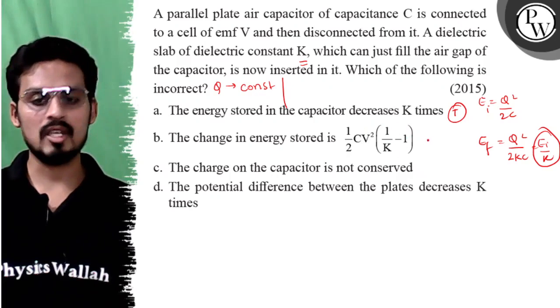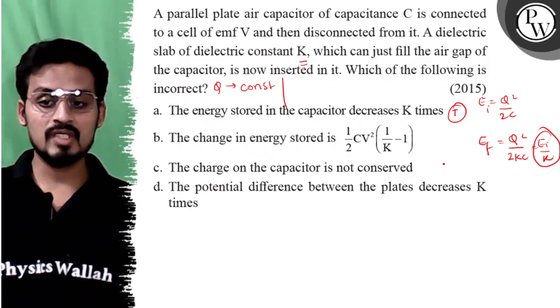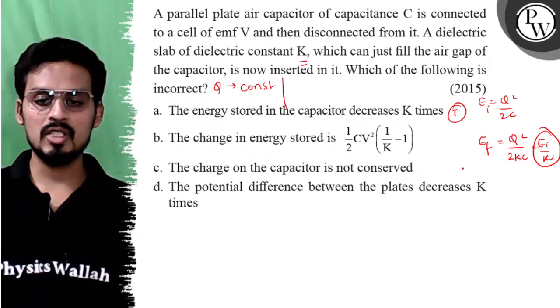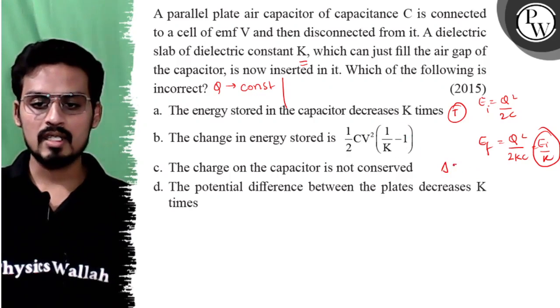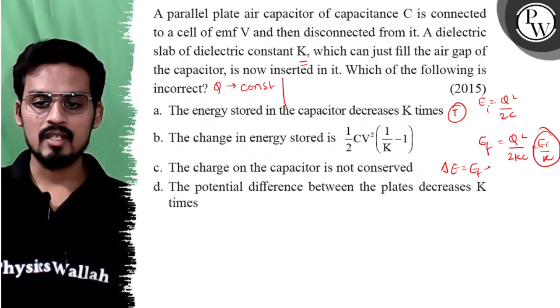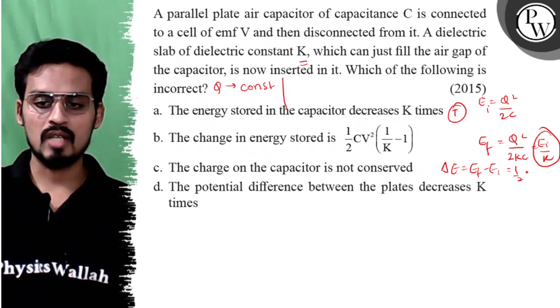The change in energy stored is half of CV square, 1 by K minus of 1. So is this the change? Yes, this would be the change because our delta E would be E final minus E initial, which is equal to half of CV square, 1 by K minus of 1. So this is also true.